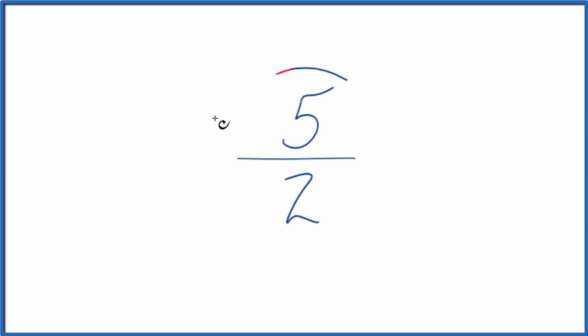Let's simplify the fraction 5 over 2, also called 5 halves. To do that, we're trying to find another fraction that's equivalent, has the same value as 5 over 2, it's just been reduced or simplified to its lowest terms.